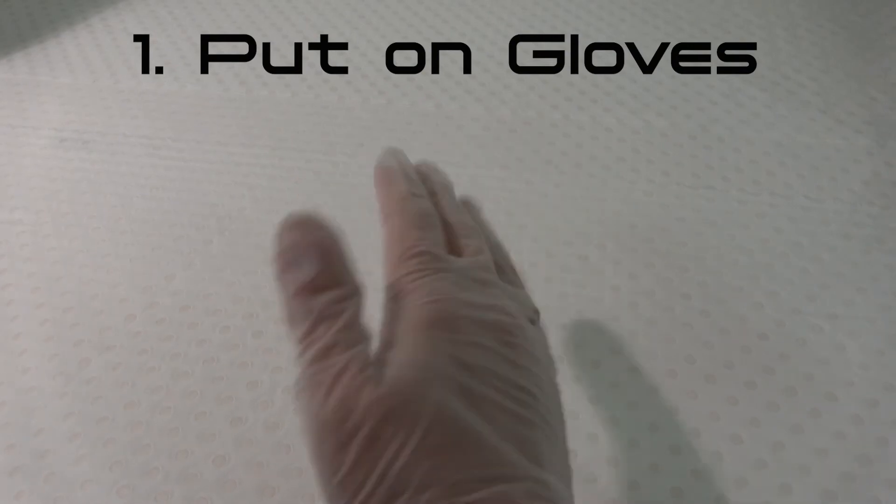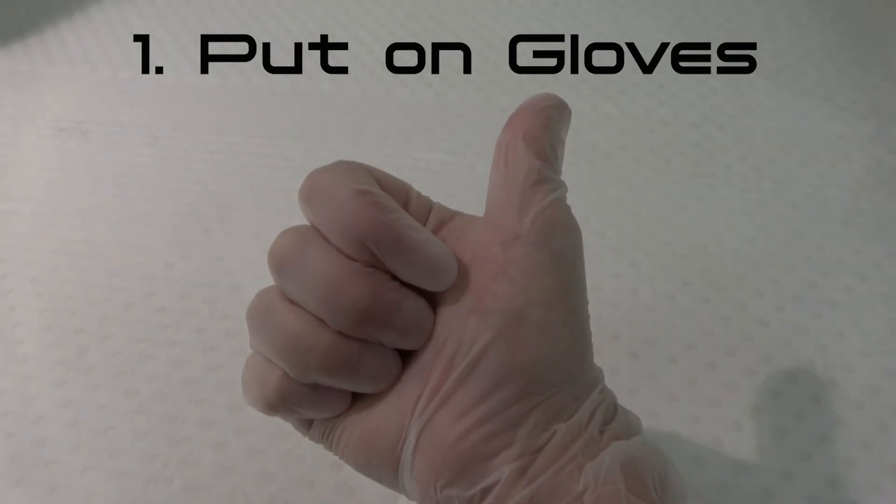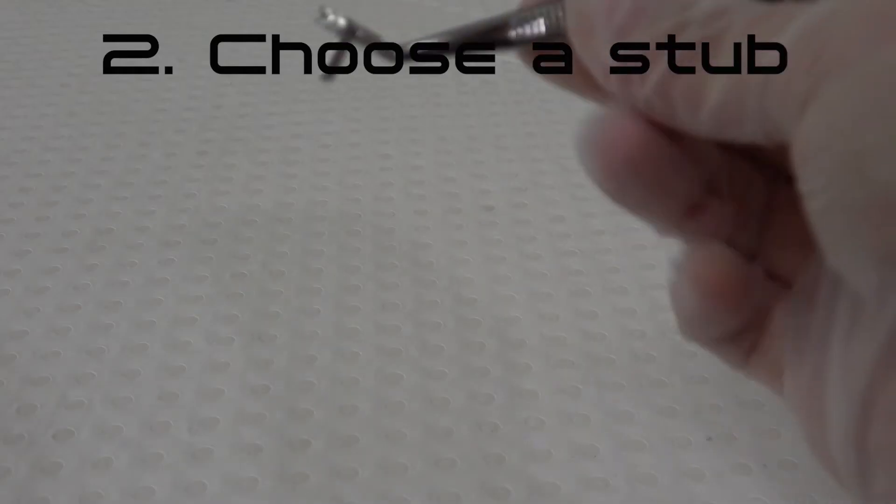Step 1. Put on gloves. Always keep fingerprints off anything that will go into the SEM chamber such as stubs and samples.